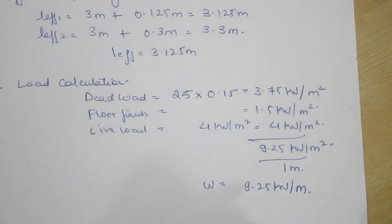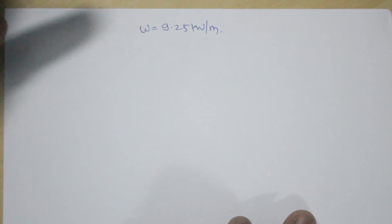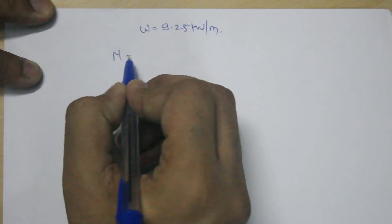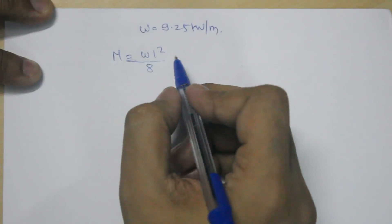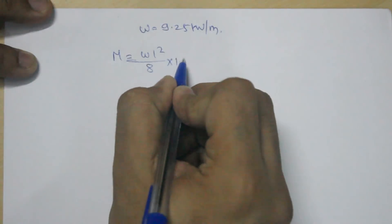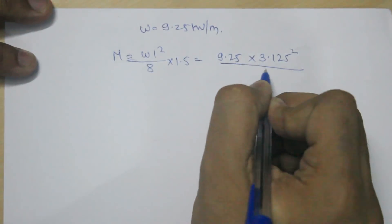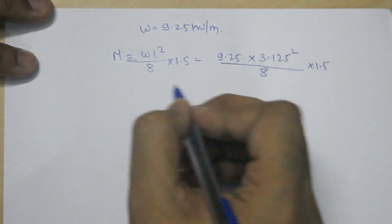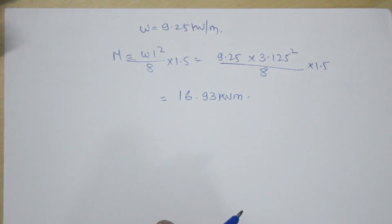Step 4 is to calculate the bending moment. The maximum moment for a simply supported slab is WL²/8, multiplied by 1.5 since W is the working load. With W = 9.25 kN/m and L_eff = 3.125 m: M = 9.25 × 3.125² / 8 × 1.5 = 16.93 kN·m per meter width.